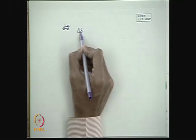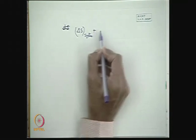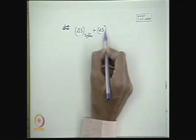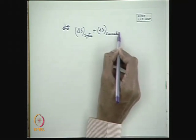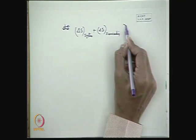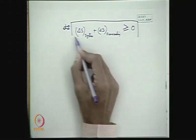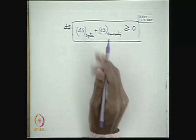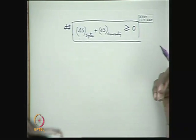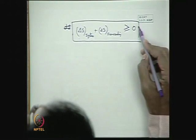We get the definition of entropy, and the second law tells the directional law with this definition: all processes take place in such a way that the entropy change — for example, if I write a finite entropy change — the algebraic sum of the entropy change of system and surroundings together should be greater than or equal to zero. These are very important principles: ΔS_system + ΔS_surroundings ≥ 0.